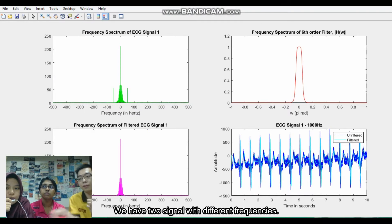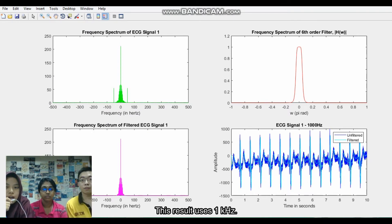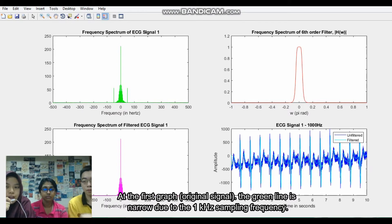We have two signals with different frequency. This result will be used for 1kHz at the first plot where the green line will become narrow.